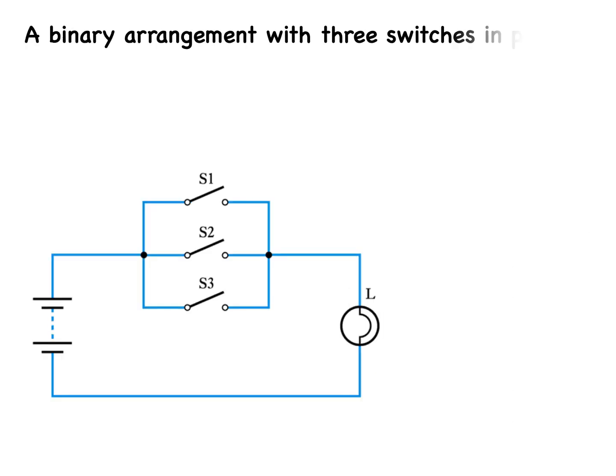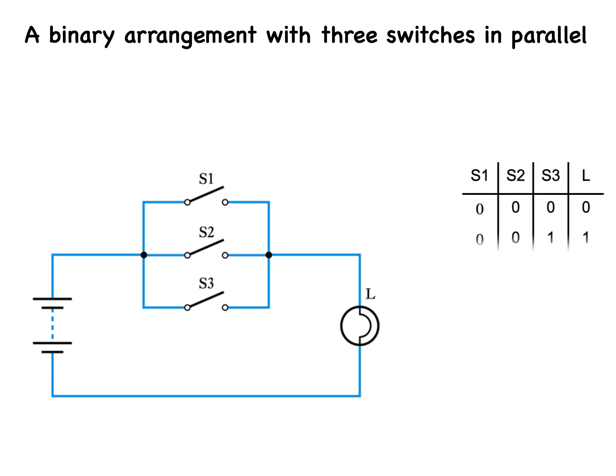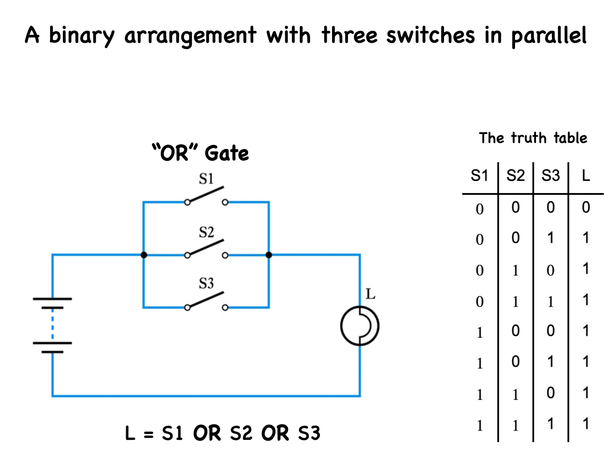Here is yet another binary arrangement with three switches, this time in parallel, which generates the truth table. The logic of these three switches can be described by the corresponding OR equation.